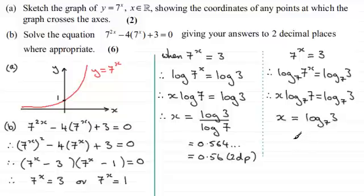And if you work this out on your calculator again you should find you get 0.564 and so on which obviously is 0.56 to 2 decimal places. So that's another way of doing it.